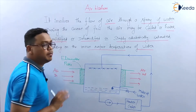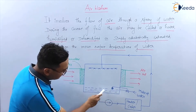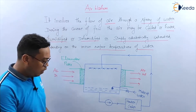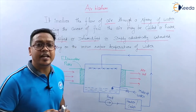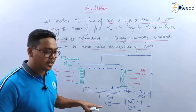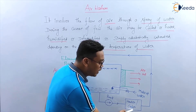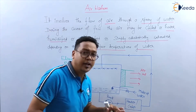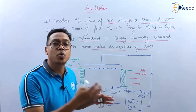This is the air washer, and this is the water. This water is taken by a recirculation pump. This pump will send the water to a heater or cooler — that means externally, this water may be heated or cooled externally.